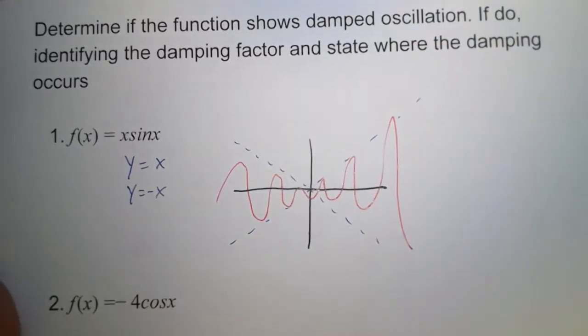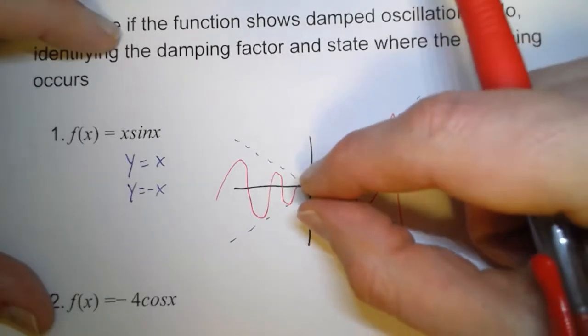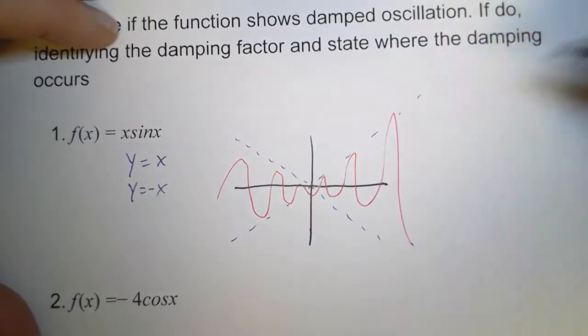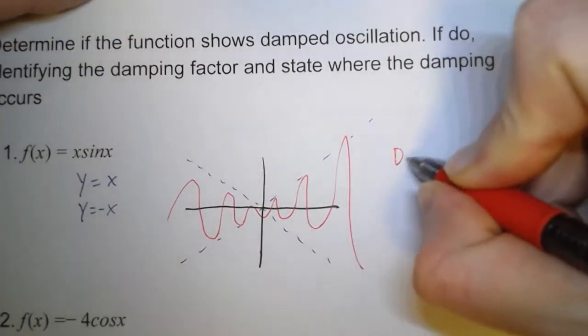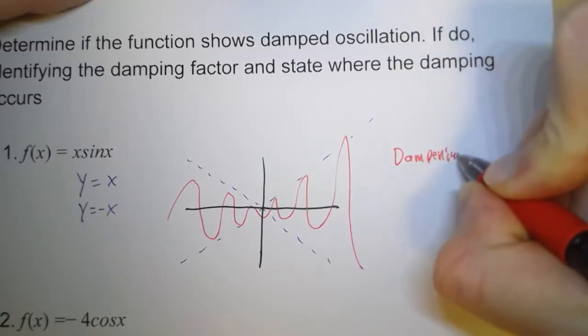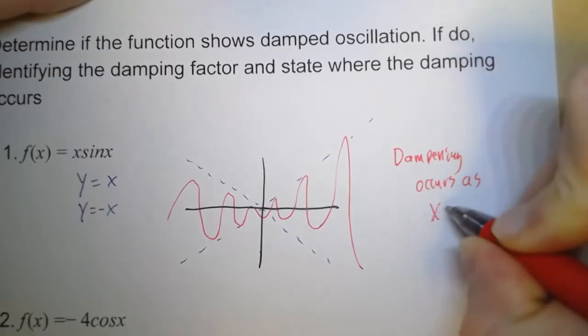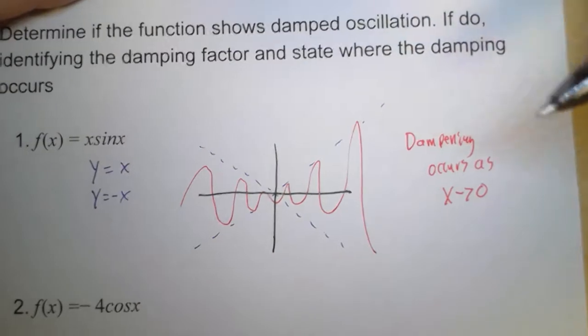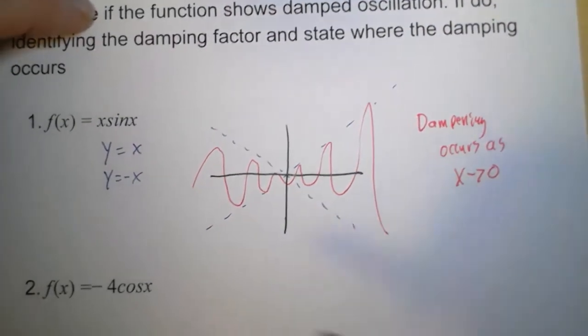So where does the dampening occur? Well, rather, is there a dampening? And yes, notice what's happening. As you get closer to zero, the amplitude gets smaller and smaller until, at the origin, the amplitude is zero. So, what we say is the dampening occurs as x goes to zero. As x gets closer to zero, the amplitude gets closer and closer to zero itself. So that's all we do.